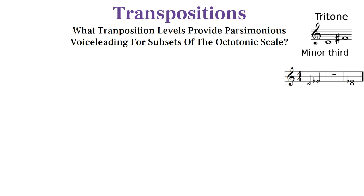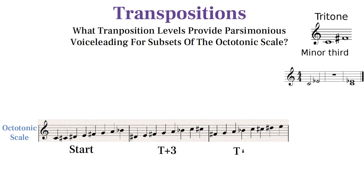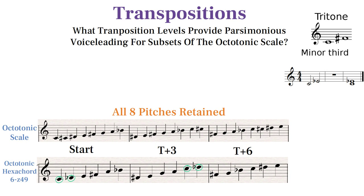Any guess what transposition levels Scriabin might use to transpose chords from a diminished scale with parsimonious voice leading? If you guessed minor thirds and tritones, you are correct. While a full octatonic scale would retain all its pitches transposed a minor third or tritone away, its subsets like 6Z49 retain four pitches at those transposition levels, making those levels of transposition best for parsimonious voice leading.